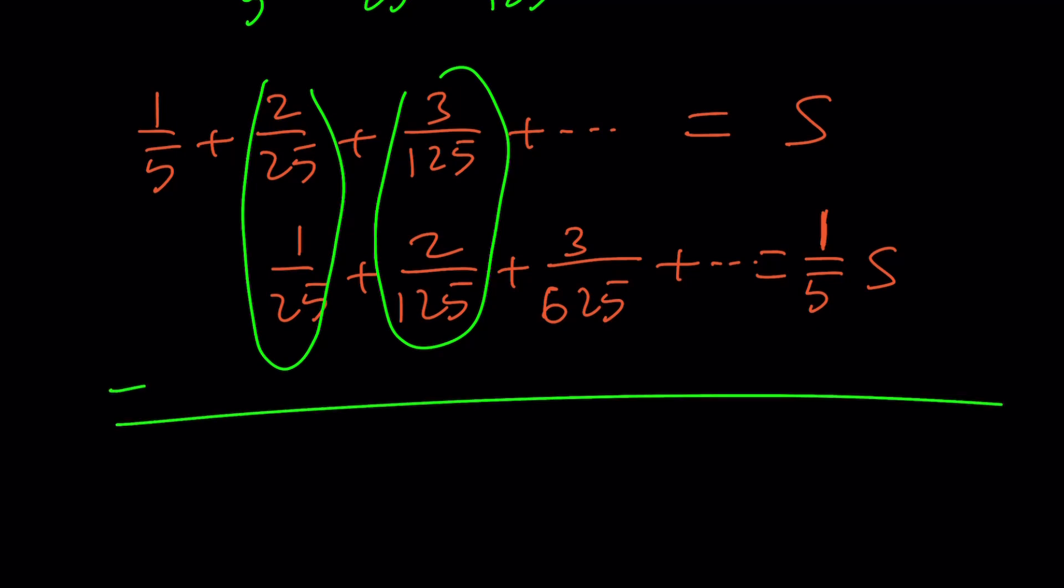And the difference between their numerators is 1, so we're going to go ahead and subtract. Yes, that's the thing. 1 over 5 is just going to be 1 over 5 minus 0. When you subtract 2 over 25 minus 1 over 25, this is going to be 1 over 25, and then you're going to get 1 over 125, and then 1 over 625, so on and so forth.